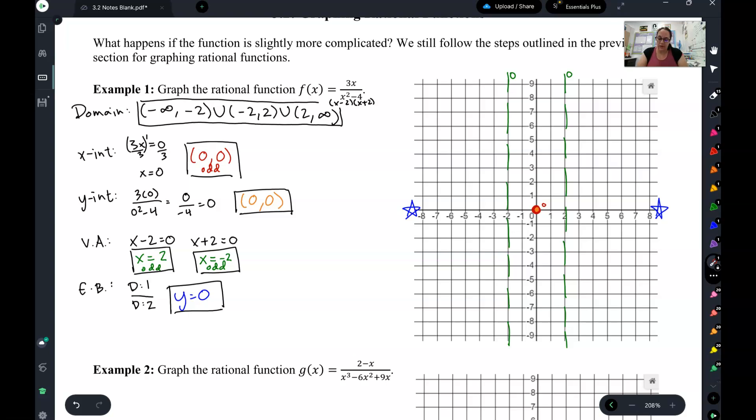Vertical asymptotes are your denominator. So we have x equals 2. Set this denominator equal to 0. Get x equals 2, which is odd. Because once again, the secret exponent on this is a 1, which is an odd number.